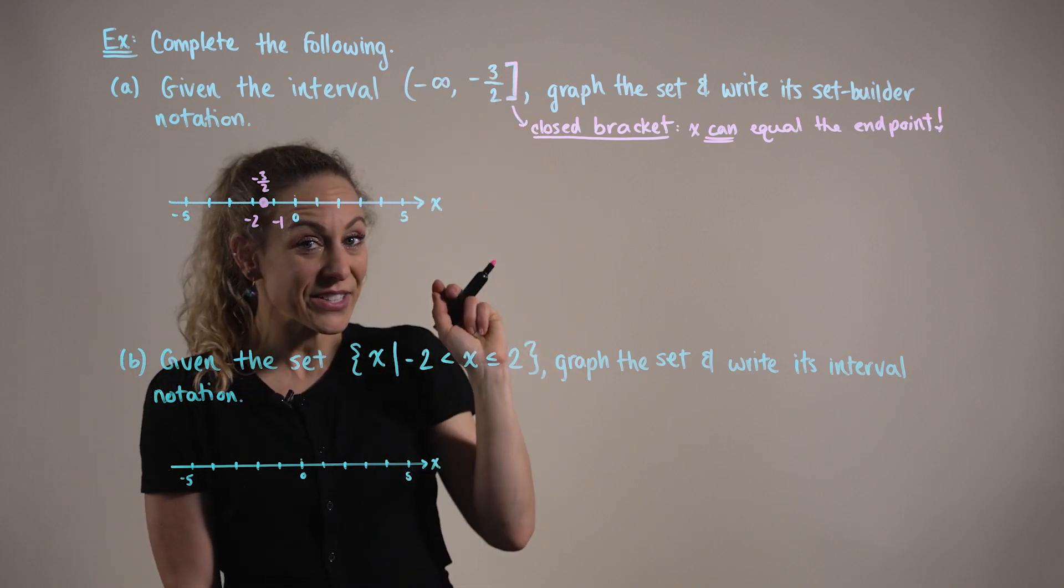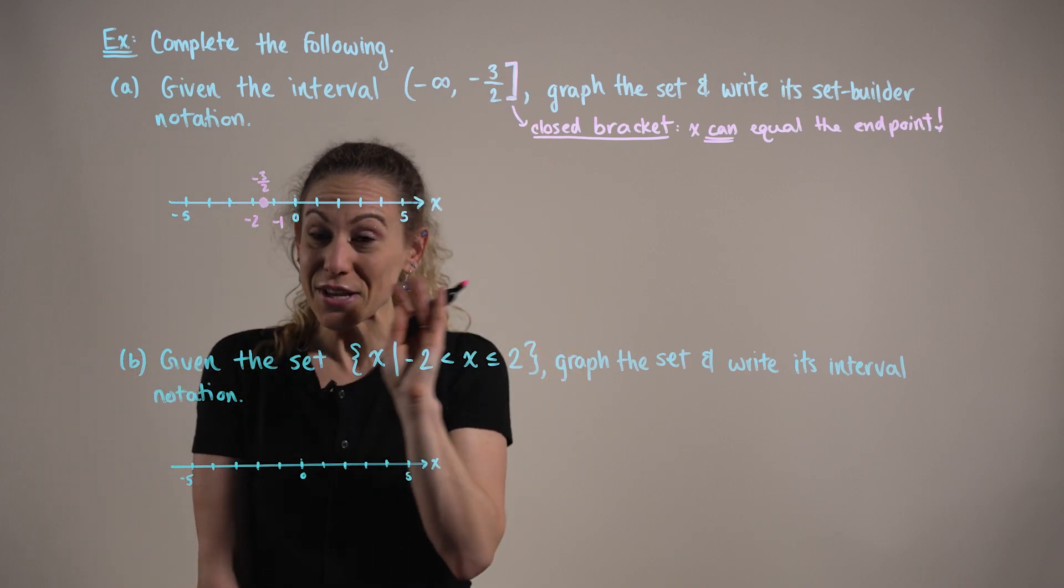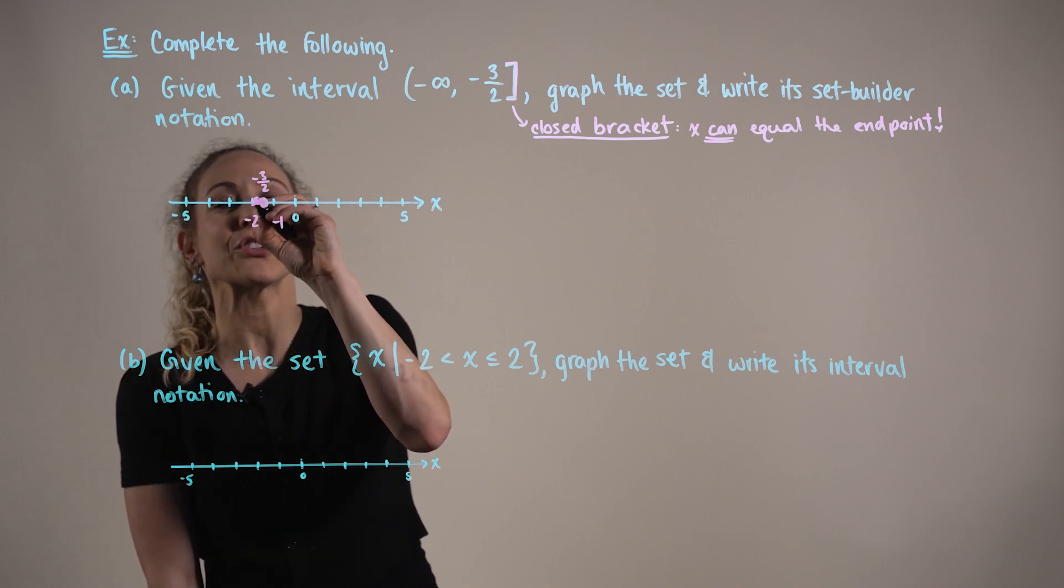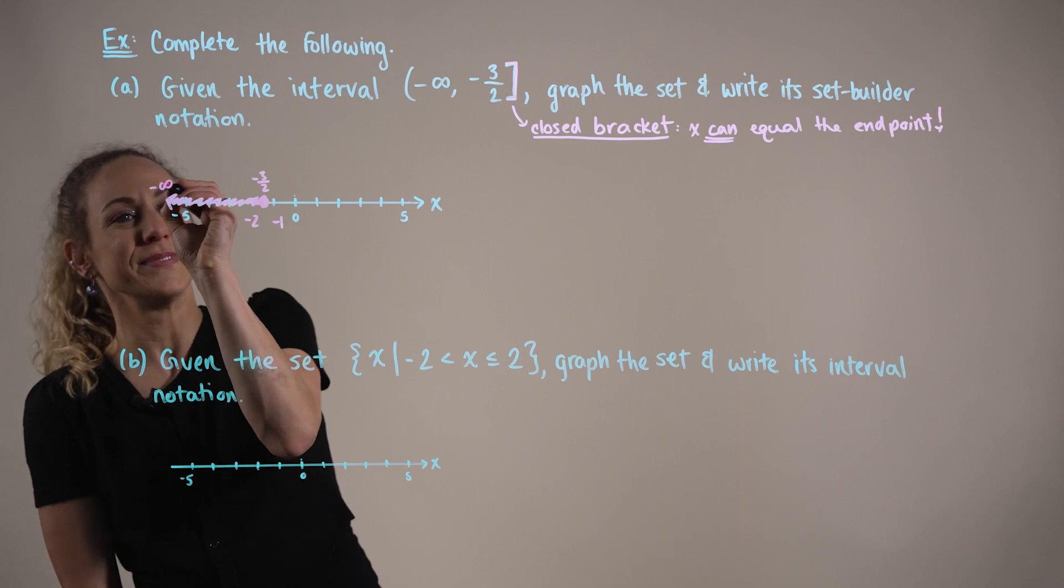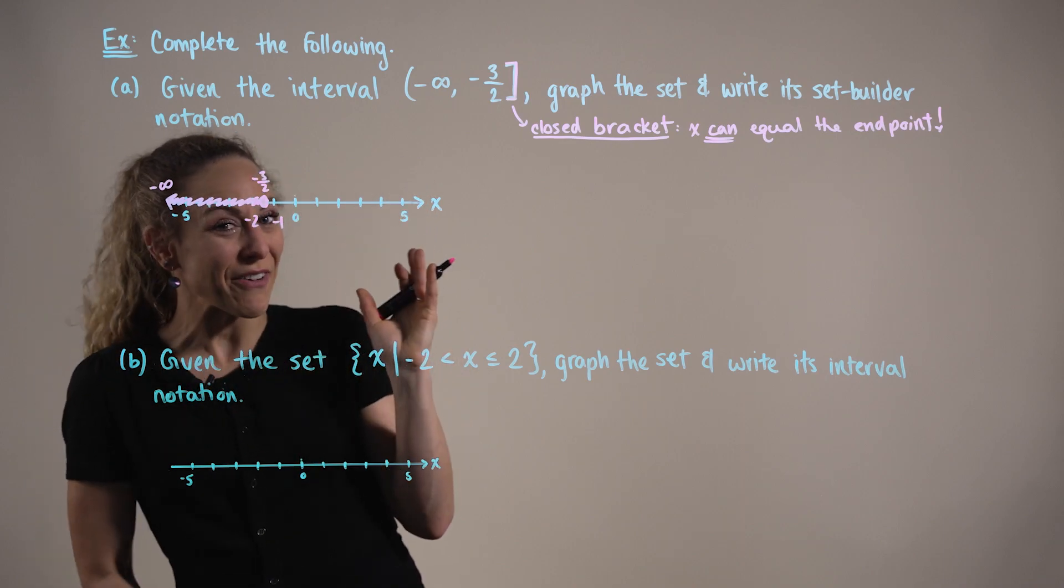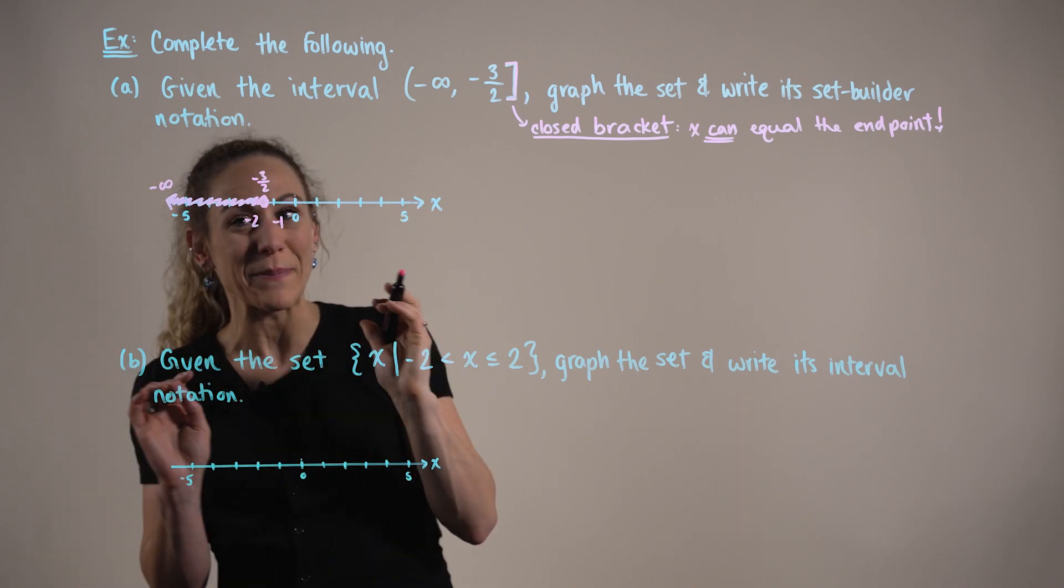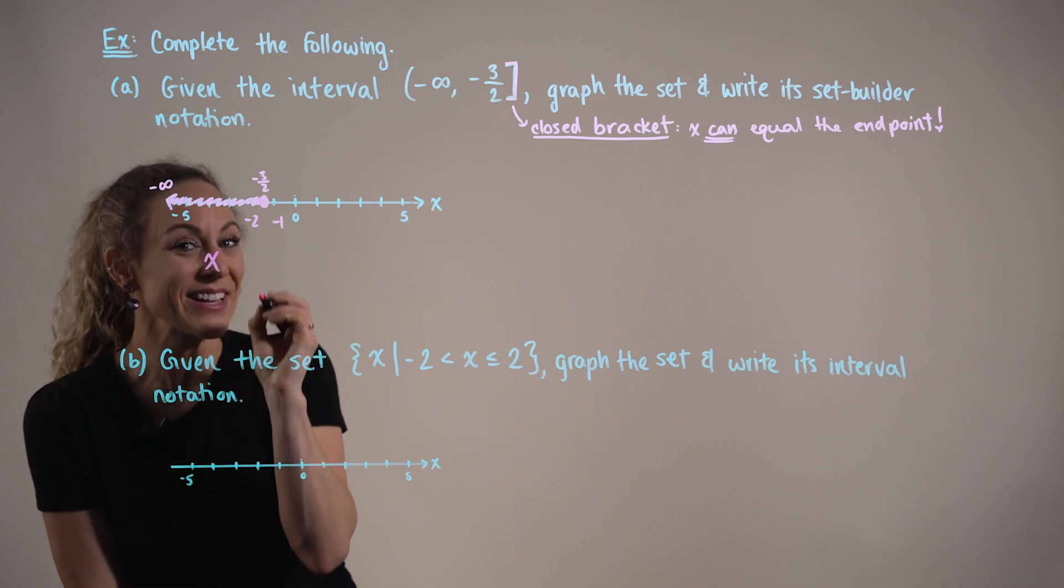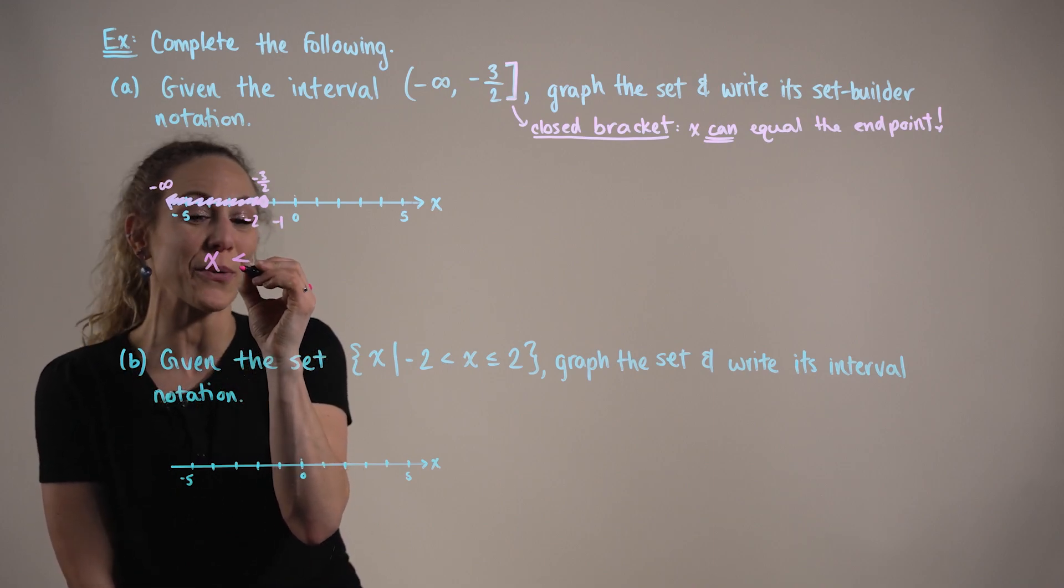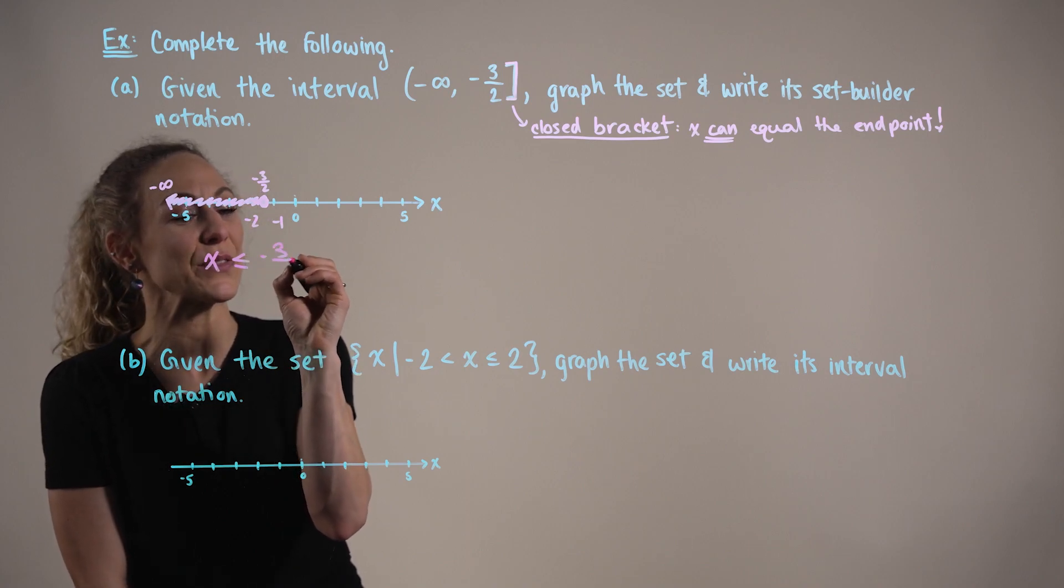And then we have all of the x values that are less than or equal to this point. So we are shading the region moving in an infinitely negative direction. In writing this graph in its inequality form, we can think about all of the x values that are going to be less than or equal to minus three halves.